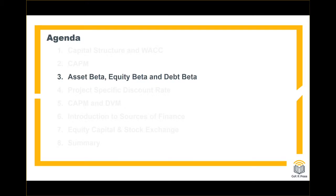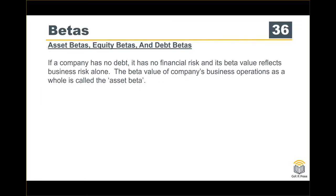Here is a topic about asset beta, equity beta, and debt beta. We just finished the discussion of the capital asset pricing model, the security market line, and we showed an example about how to get the cost of equity by applying CAPM. Now we go into the next topic: asset beta, equity beta, and debt beta.